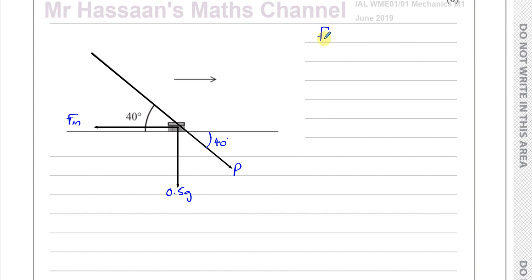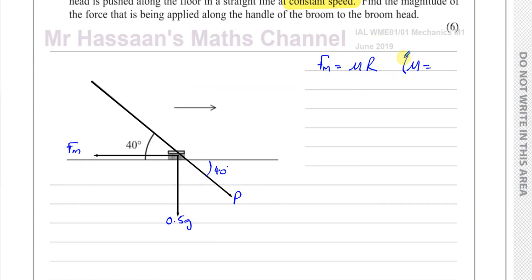Why is it reached its maximum value? Because the object is in motion. So the maximum value of friction has been achieved. That means that the value of friction, Fmax, will be given by mu times R. And we're told in the question that mu is equal to a quarter. And, of course, the other force acting is the reaction force when the objects are in contact with the surface. So this is reaction force, R. So those are the forces acting on this particle.